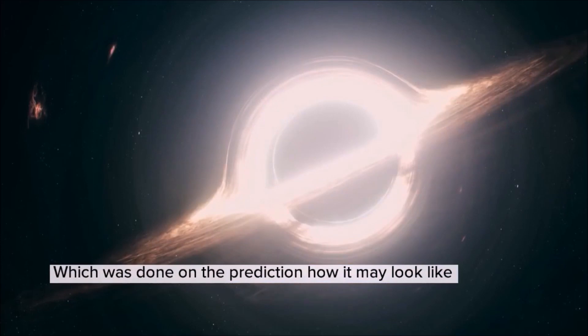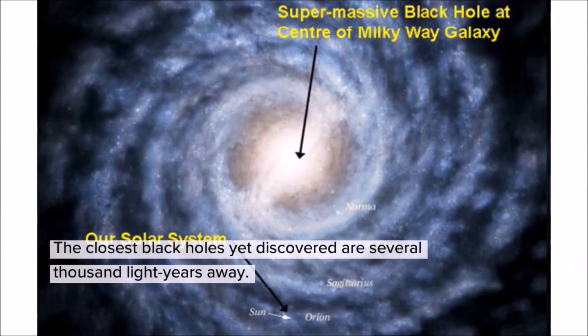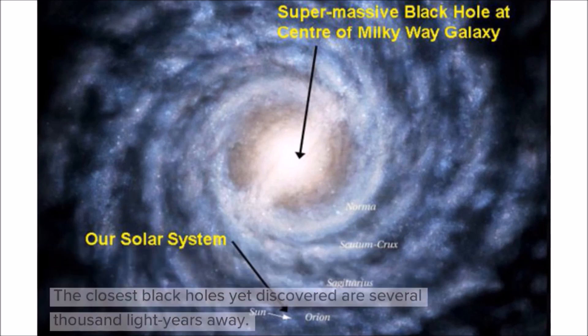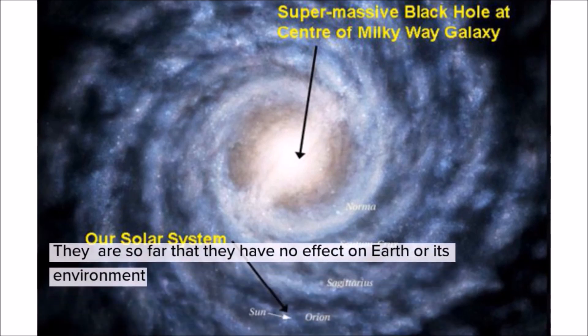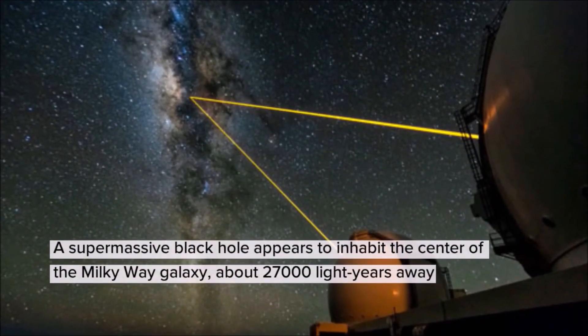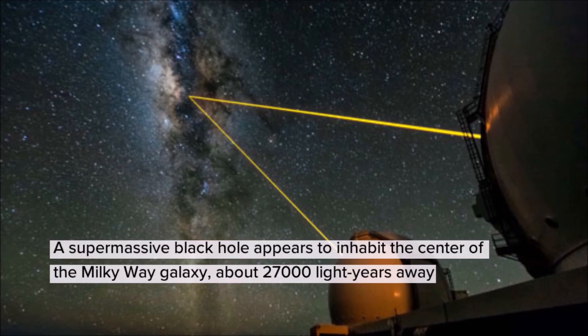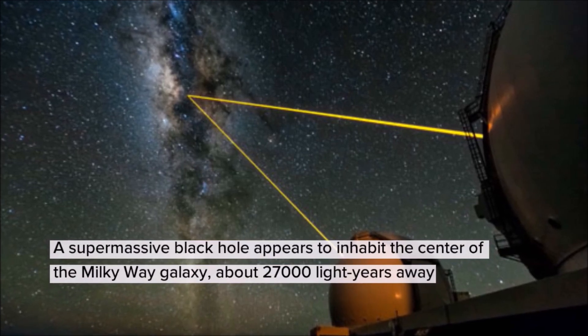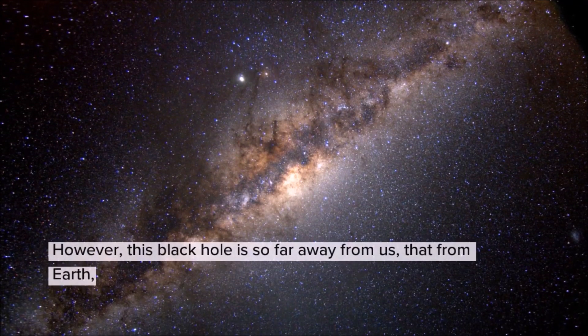The closest black holes yet discovered are several thousand light-years away. They are so far that they have no effect on Earth or its environment. A supermassive black hole appears to inhabit the center of the Milky Way galaxy, about 27,000 light-years away.